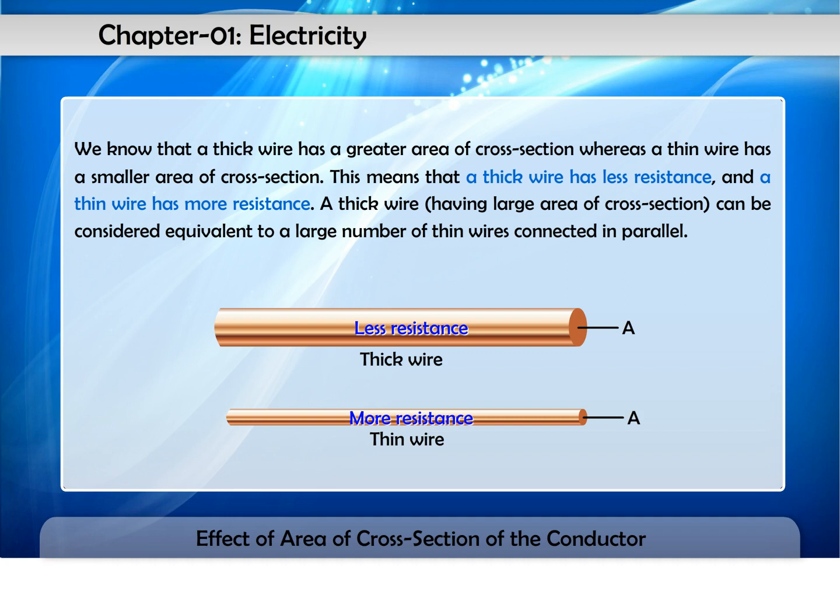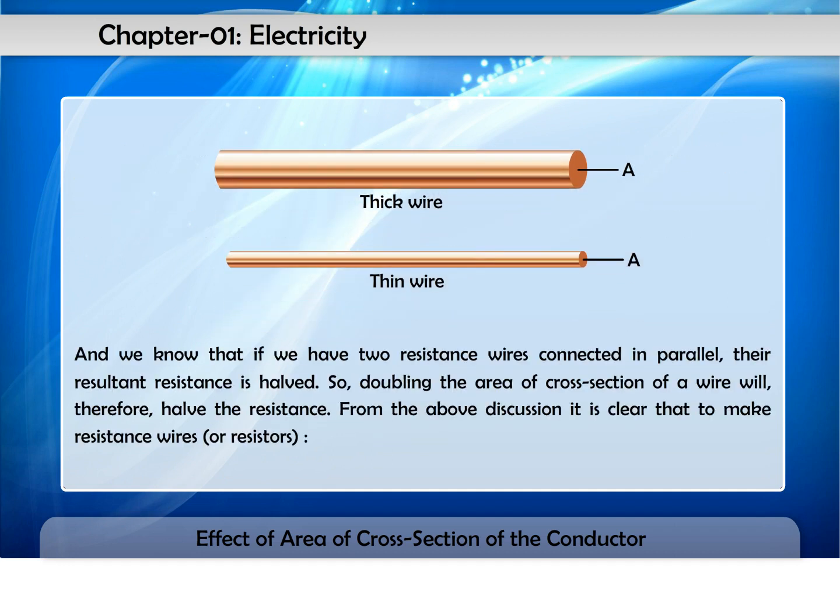A thick wire having large area of cross-section can be considered equivalent to a large number of thin wires connected in parallel. And we know that if we have two resistance wires connected in parallel, their resultant resistance is halved, so doubling the area of cross-section of a wire will therefore halve the resistance.